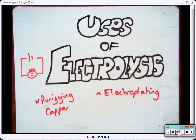This video is going to look at two of the main uses of electrolysis, namely purifying copper and electroplating. It'll look at what they are and how they're useful.